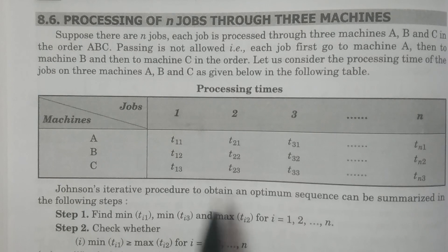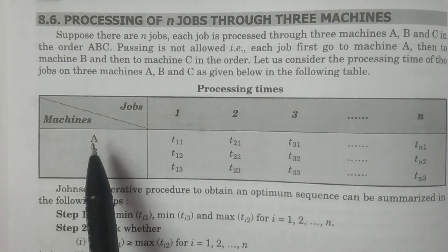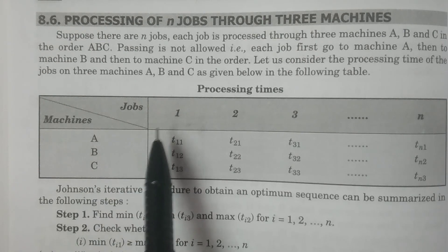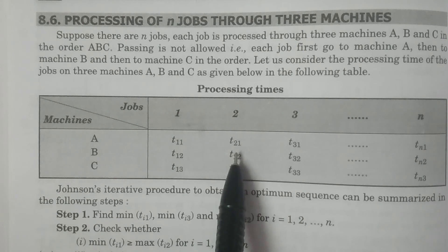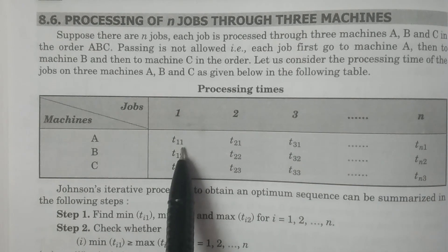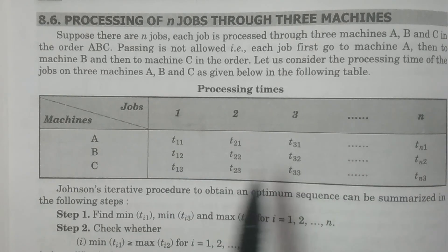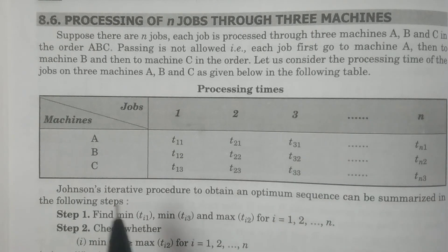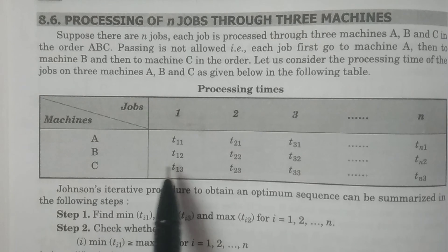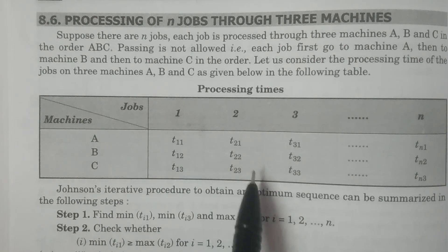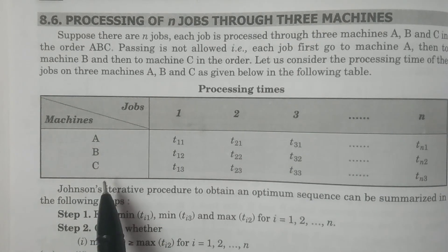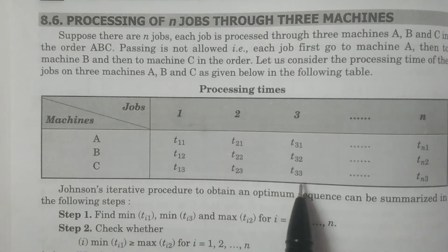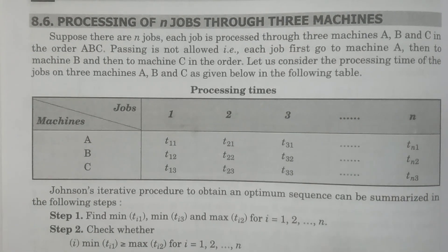The processing times are considered as follows: jobs are indexed one, two, three, and so on up to n, across the three machines A, B, C. Processing times for machine A are t11, t21, t31, and so on, tn1, where the second subscript j=1 indicates the first machine and i indicates the job. Similarly, for machine B: t12, t22, t32, and so on, tn2. For machine C: t13, t23, t33, and so on, tn3.